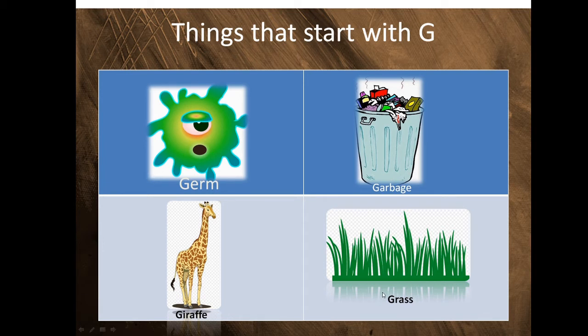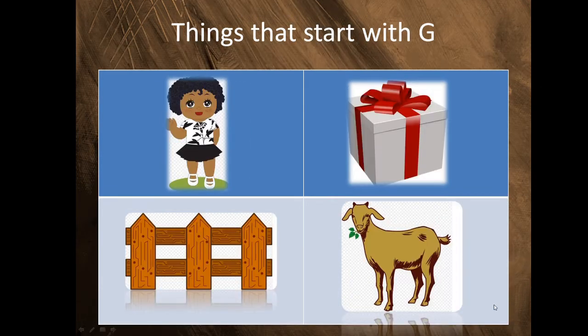Let's look at some more G words. This is a girl. This is a gift. This is a gate. And this is a goat. All these have a G sound. Can you say these with me? Girl. Gift. Gate. Goat.